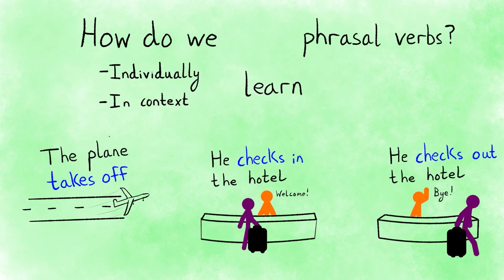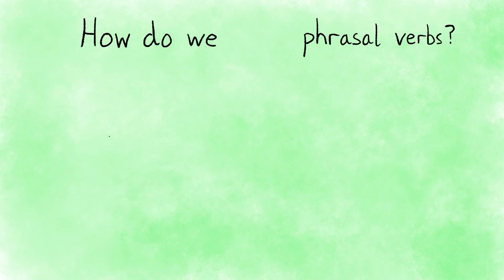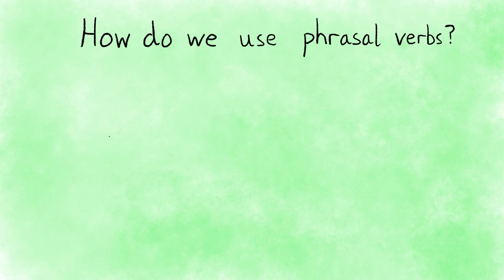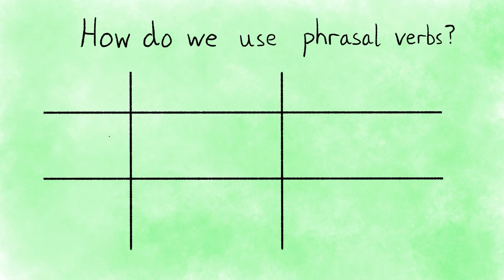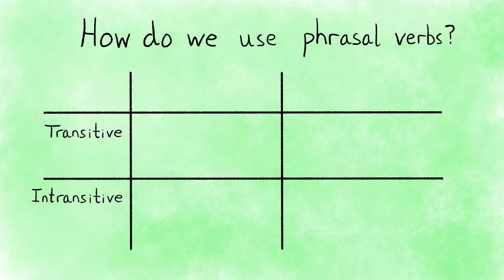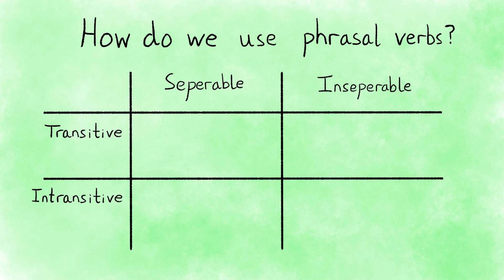The next thing we want you to know are the different grammar rules of phrasal verbs, because once you learn the meaning of a phrasal verb, the next step is knowing how to use it. We can divide the different phrasal verbs into four categories: transitive, intransitive, separable, and inseparable.